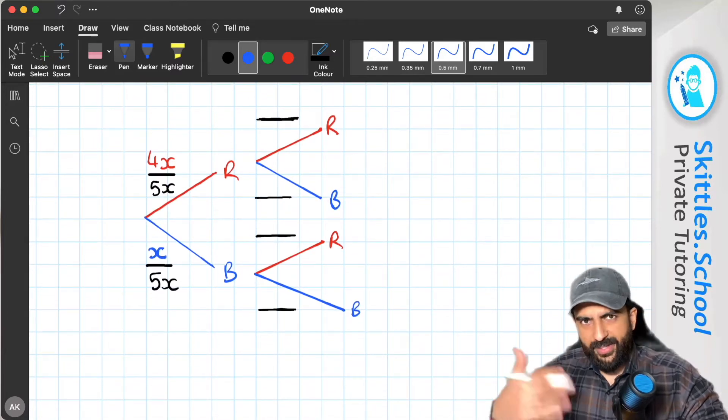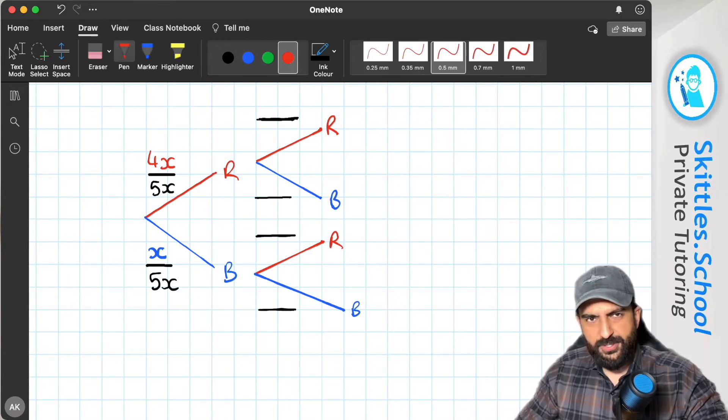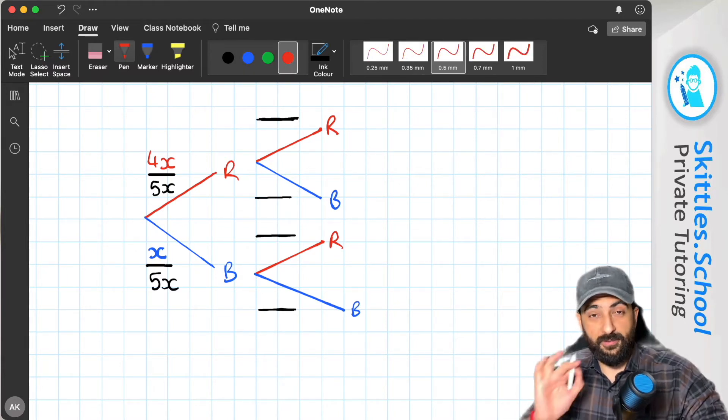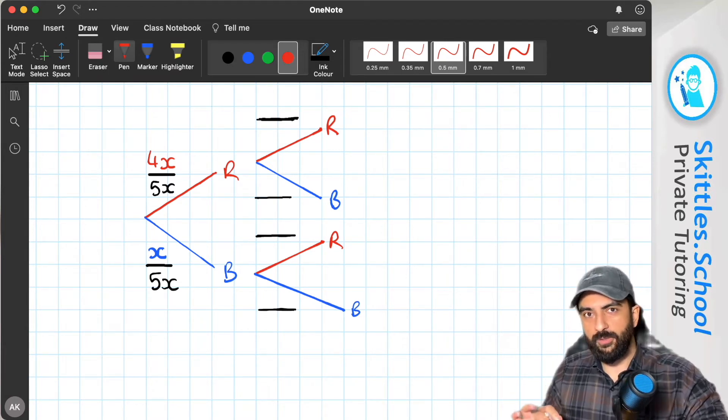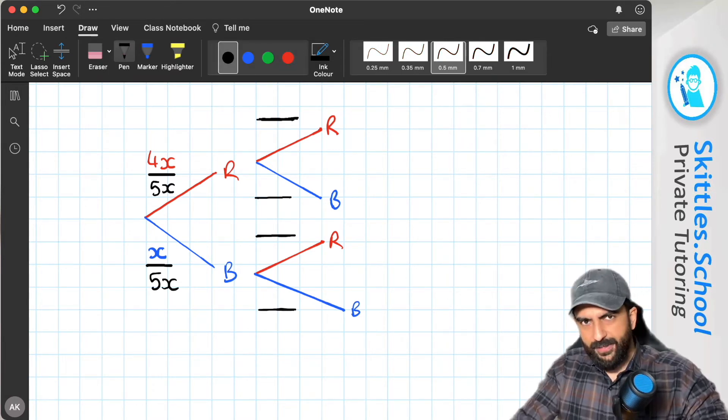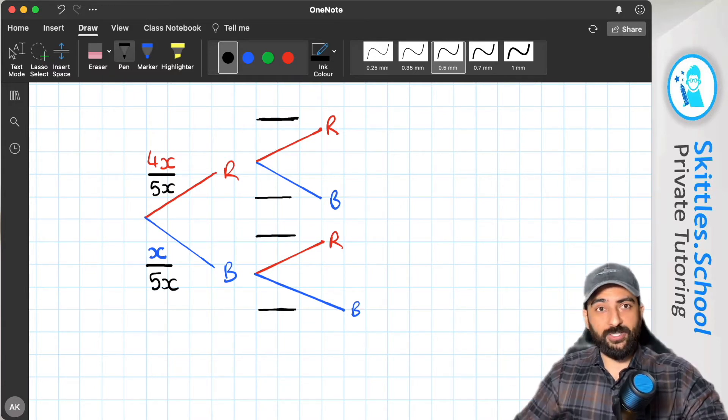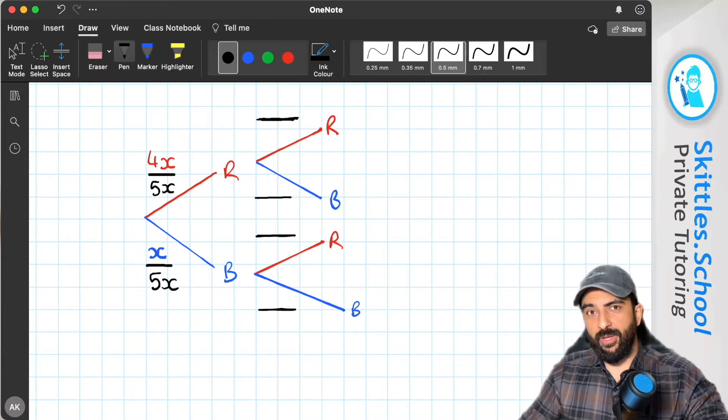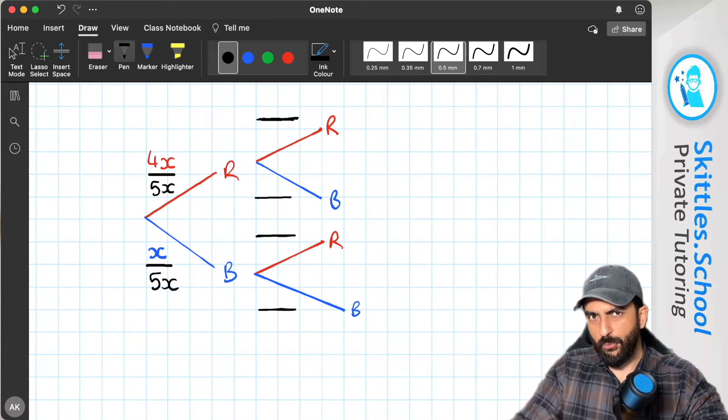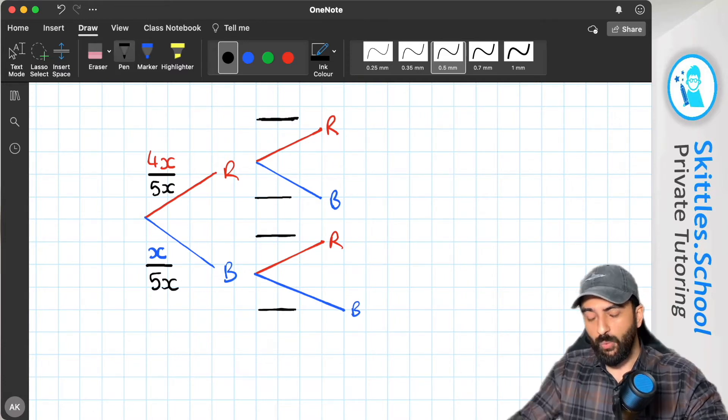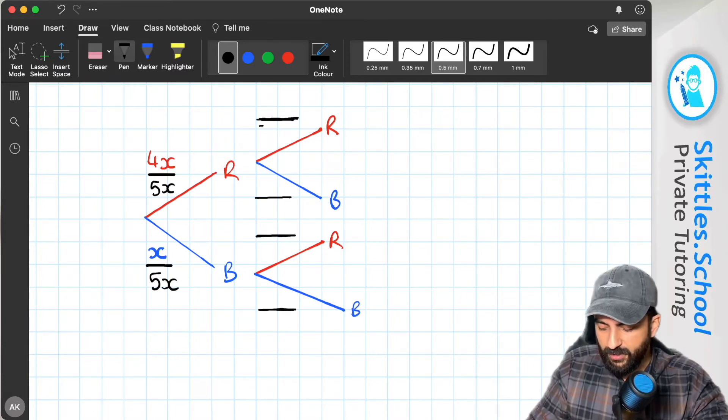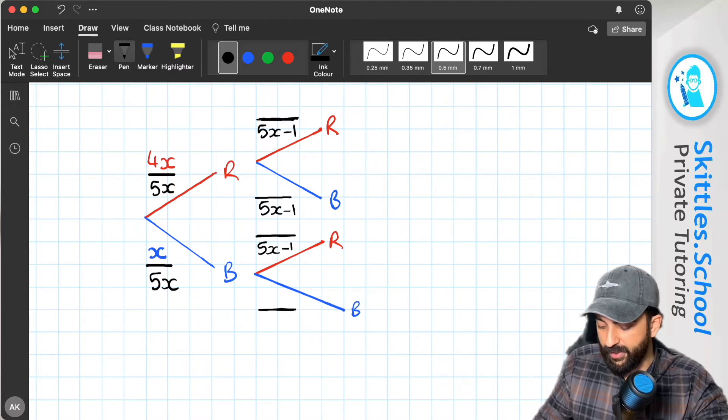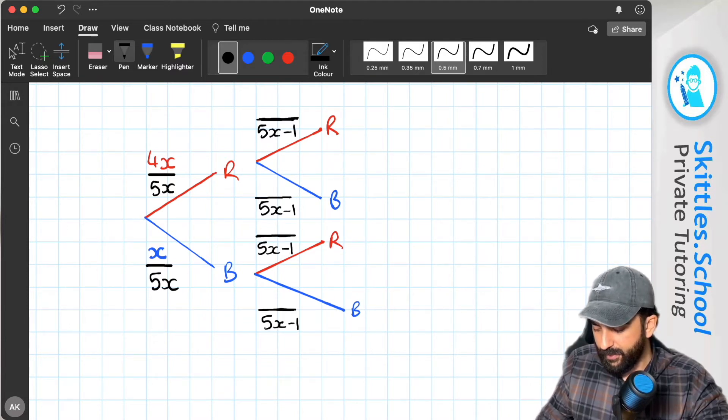Now, what about the next stage? So let's first follow the red branch. So if the first counter we picked was red, how would that affect the total? So the total now would be 1 less. So 5x is the total, 1 less than that. So we're taking 1 counter away from that. So the total now is going to be 5x take away 1 counter. So that's going to be the same for all of them because you're taking 1 counter. The first counter that you've taken is that 1 counter.